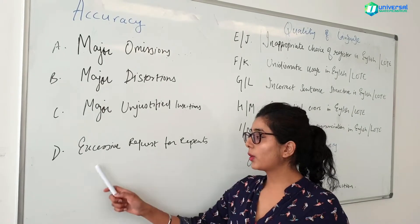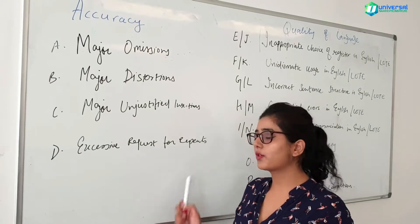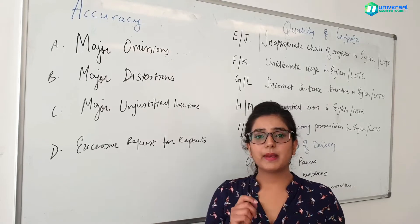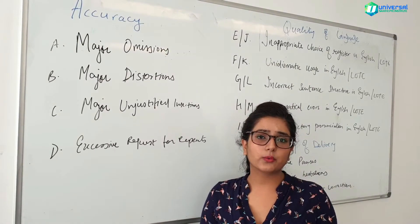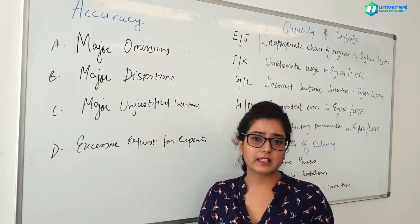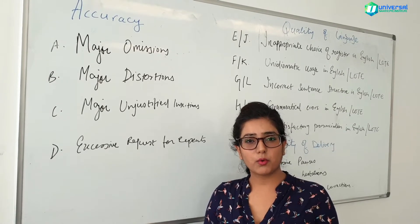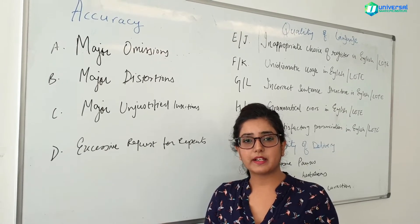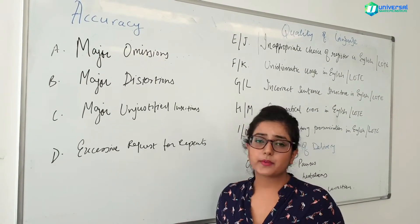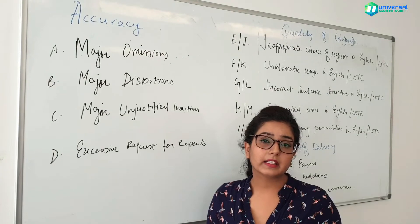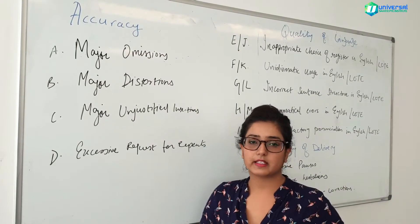Code D means excessive requests for repeats. You are allowed one repeat per dialogue, and if you take more than one repeat there is a penalty for it. Sometimes you might end up failing the test if you have taken too many repeats.